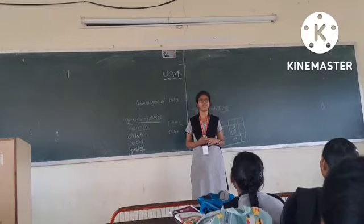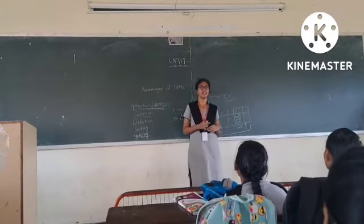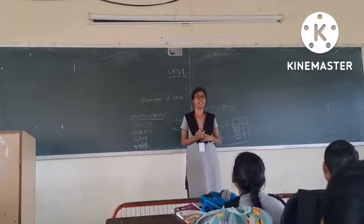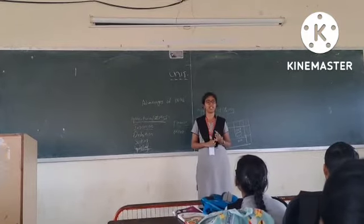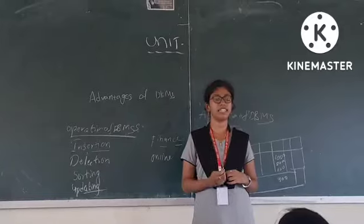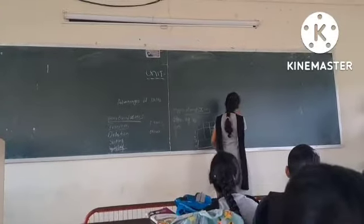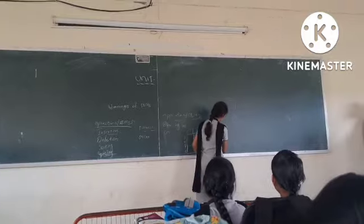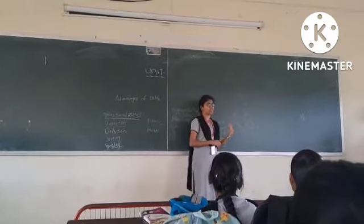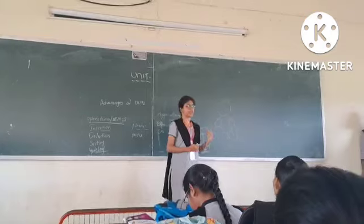Now I will explain about database models. A database model is defined as a set of rules that defines how a database stores data. There are three types: hierarchical model, network model, and relational model. In the hierarchical model, records are arranged like a hierarchy. Low-level nodes are known as child nodes. A parent node can contain multiple child nodes, but a child node should contain only one parent node.